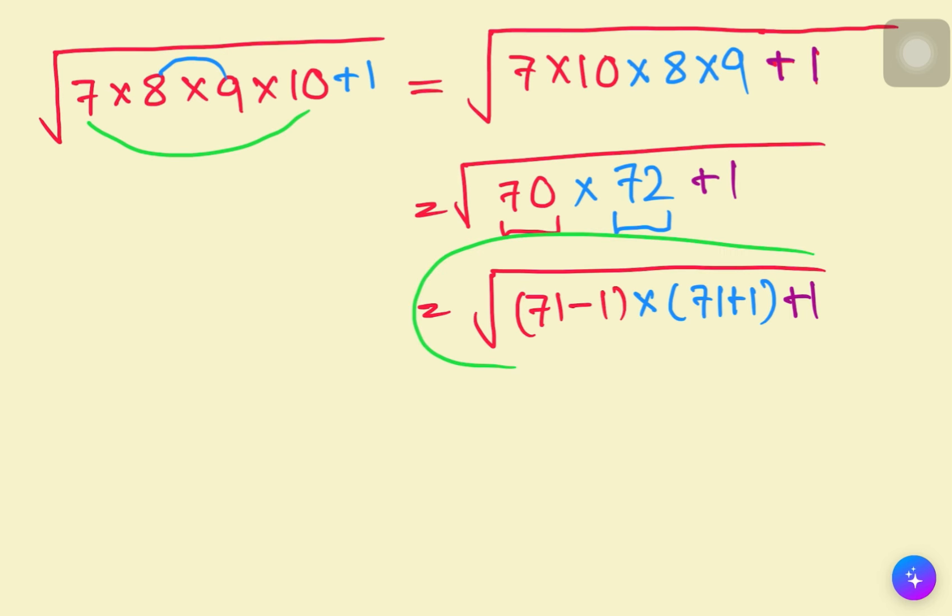In this step, we can see that a squared minus b squared equals a plus b times a minus b. This is the difference of two squares rule. We must use this difference of two squares formula.